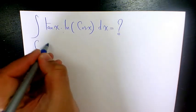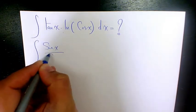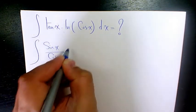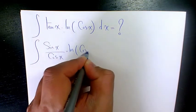You know, tan x is sine over cosine. Then we have ln cosine x dx.